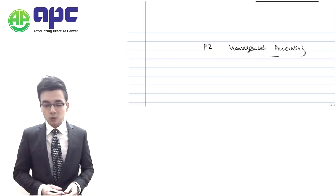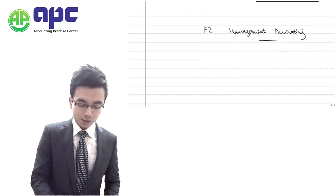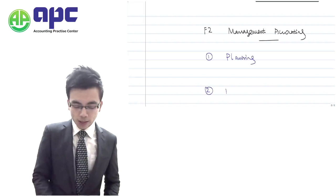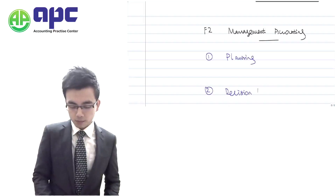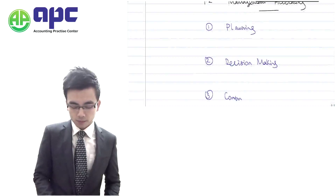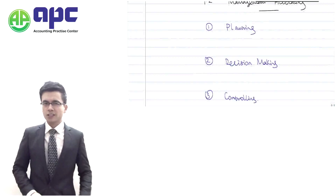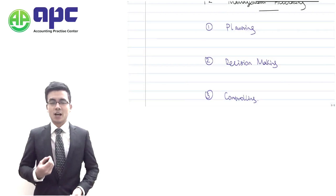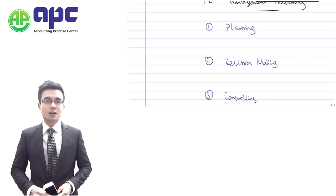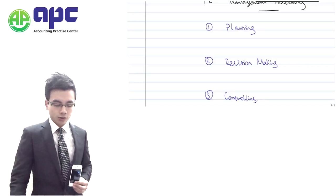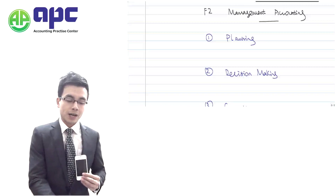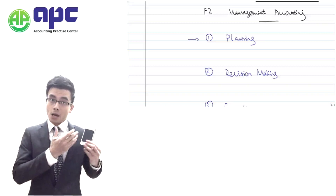Management accounting is something to do with planning, decision making, and controlling within the business. For example, as CEO of Apple PLC, we are going to manufacture the iPhone. If we are going to manufacture this iPhone, we have to rely on our management accounting records. We use these records to plan what we are going to do — for example, we are going to manufacture this iPhone.